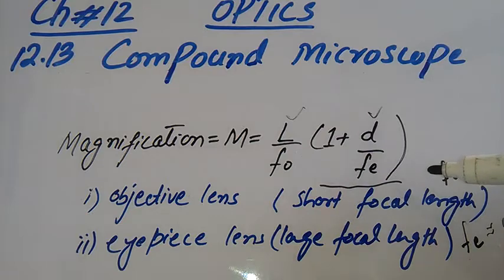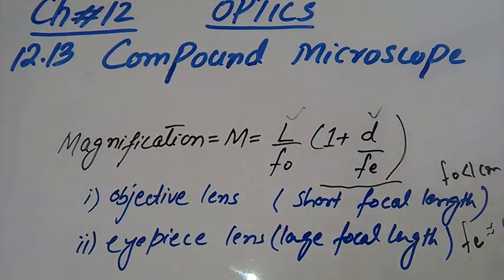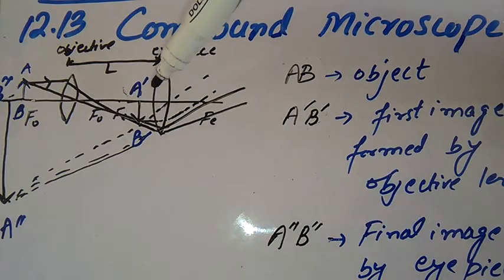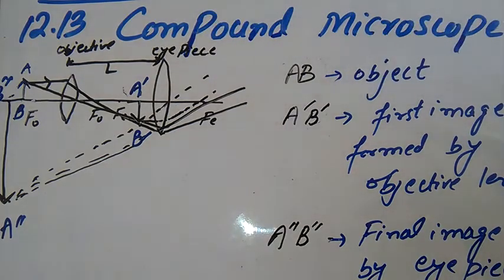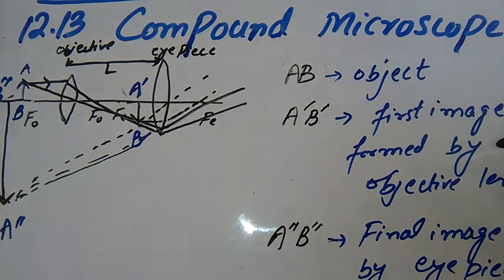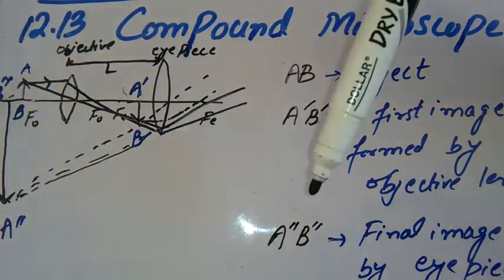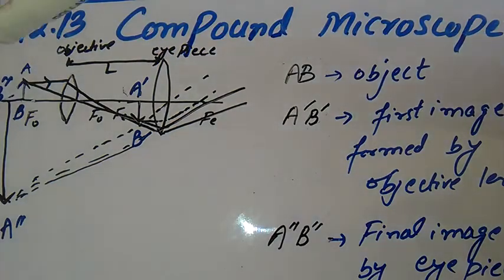Now we will derive the magnification formula. We need to draw the ray diagram. The object is AB, and the objective lens forms a real inverted image, which is the first image. This image acts as an object for the eyepiece lens. The final image formed by the eyepiece is a virtual, erect, magnified image — A double dash, B double dash.